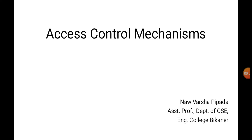Hello everyone, this is Navvarsha, assistant professor, department of CSE, Engineering College Bikaner. In the last lecture we studied about flow control mechanisms of the data link layer. One more functionality of the data link layer is access control — which determines which station will send data when more than one station has data to transfer.